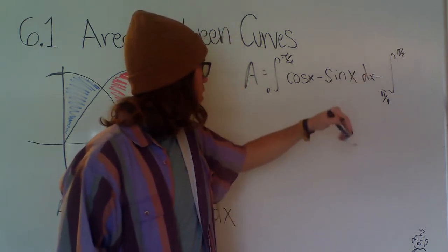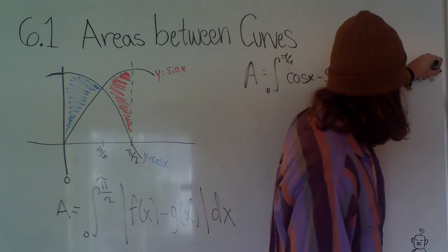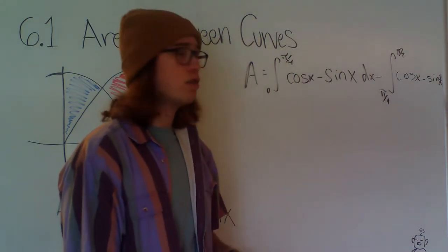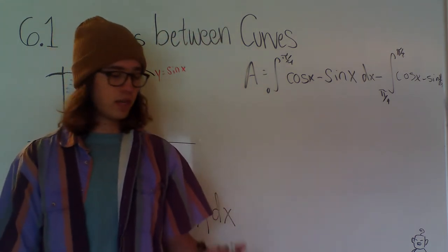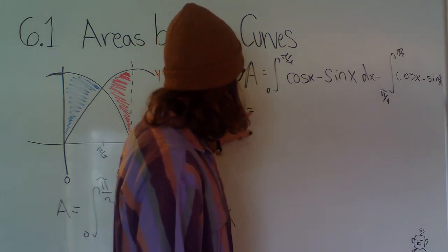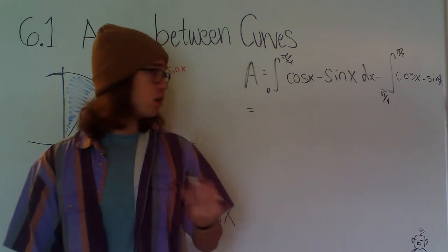So we just plug the same thing in, cosine x minus sine x dx, and we can just do these two integrals. These are very simple integrals. Well, we know the integral of cosine is sine and we know the integral of negative sine is cosine.